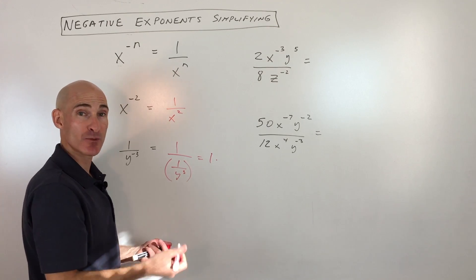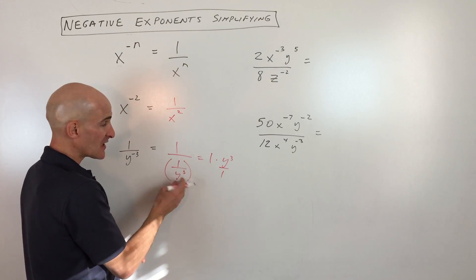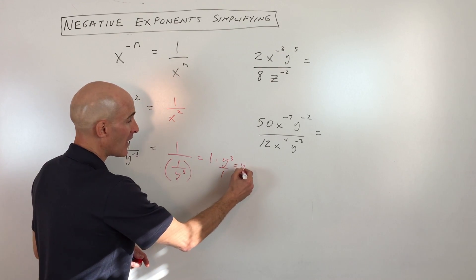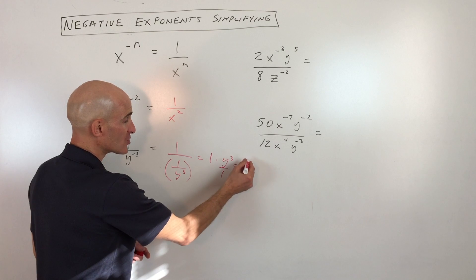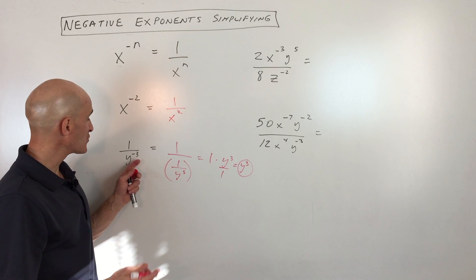So this is really like multiplying by y cubed over 1. All I did was take the denominator and flip it. Now when we multiply, we get y cubed over 1, which is just y cubed. Now that's a lot of work and that's absolutely not necessary.